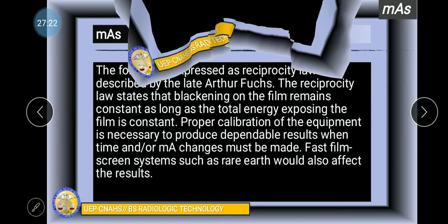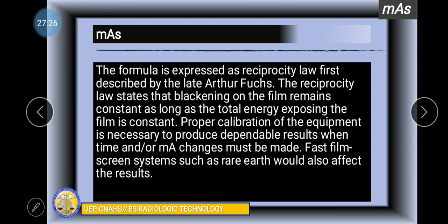The reciprocity law was described by late Arthur Fox. The reciprocity law states that blackening on the film remains constant as long as the total energy exposing the film is constant. You increase KVP or MA, you decrease time. In other way around, it creates a constant optical density, a constant blackening on the film.